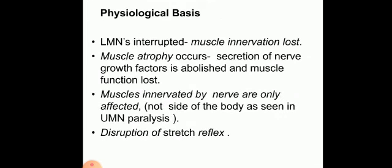The physiological basis of LMN lesions: as the lower motor neurons are interrupted, innervation to the muscle is lost, which is why there is very pronounced muscular atrophy. This occurs because secretion of nerve growth factors gets abolished and muscle function is gradually lost. In LMN lesions, only the muscles innervated by the particular damaged nerve are affected — not like UMN lesions where a group of muscles, a whole limb, or one side of the body is affected.